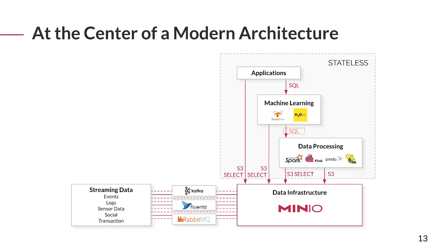The idea with MinIO is to center it within your architecture — we consider ourselves to be primary storage in modern deployments. Because of the S3 compatibility layer and our enterprise-grade feature set, we can effectively meet all storage requirements of your applications. You can have streaming data coming in through Kafka, Fluentd, RabbitMQ, or any other message broker stored in MinIO, then processed using ETLs, extract-transform-load scripts, machine learning frameworks like TensorFlow, or data processing tools like Spark or Presto — all of which have S3 compatibility and can use MinIO as intermediate storage.